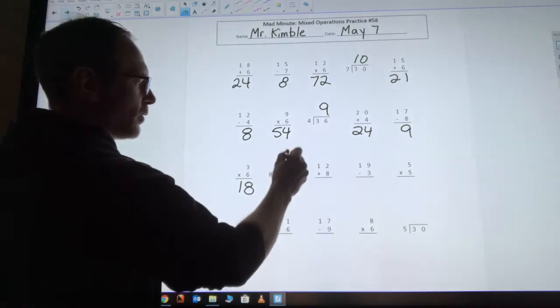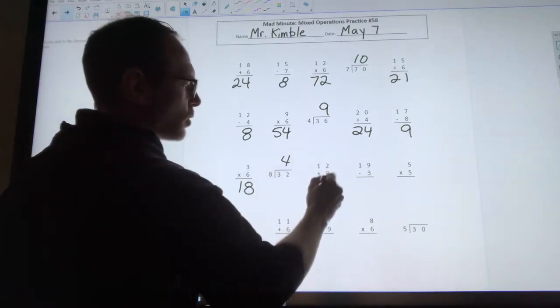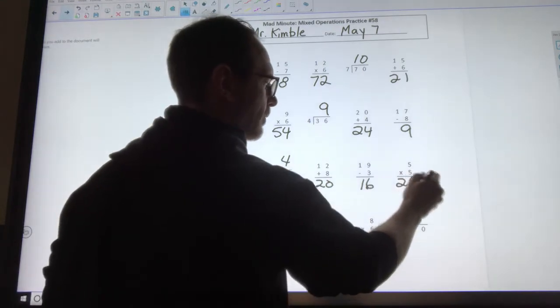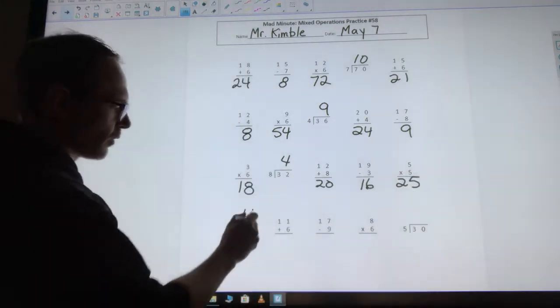32 divided by 8 is 4. 12 plus 8 is 20. 19 minus 3 is 16. 5 times 5 is 25. 8 divided by 2 is 4.